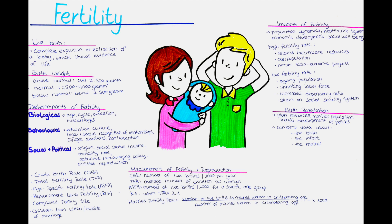Fertility rates are commonly measured using several indicators, including the crude birth rate, total fertility rate, age-specific fertility rate, replacement-level fertility, and completed family size. The crude birth rate represents the number of live births per 1,000 individuals in a given population within a specific time period. The total fertility rate estimates the average number of children a woman would have during her reproductive years, assuming current age-specific fertility rates persist. It is a hypothetical measure of fertility that is independent of the age structure of a population.